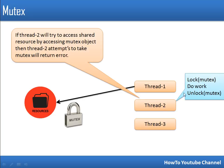Meanwhile, thread two also tries to access the resource and executes the same code, attempting to occupy the mutex object. But that mutex is already held by thread one. Since a mutex object can be held by only one thread at a time, thread two's attempt will return an error. This is how mutex works — a thread occupies the mutex object, does its work, then releases it. There is ownership.